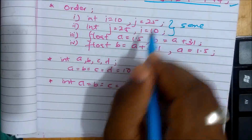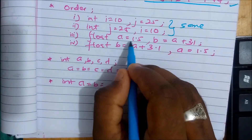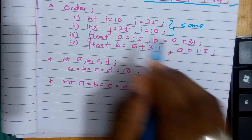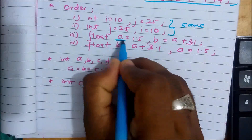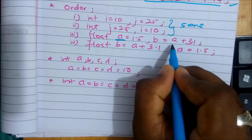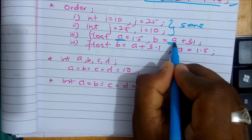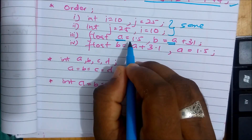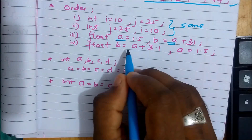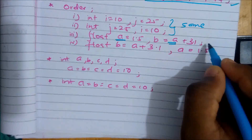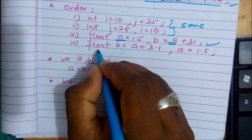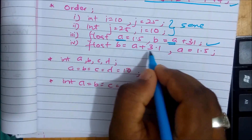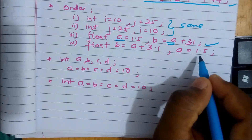More examples: float a equal 1.5, b equal a plus 3.1. The statement is equal to the initialization. This is the initialization of a. If you want to write, you can write: float b equal a plus 3.1 equal 1.1.